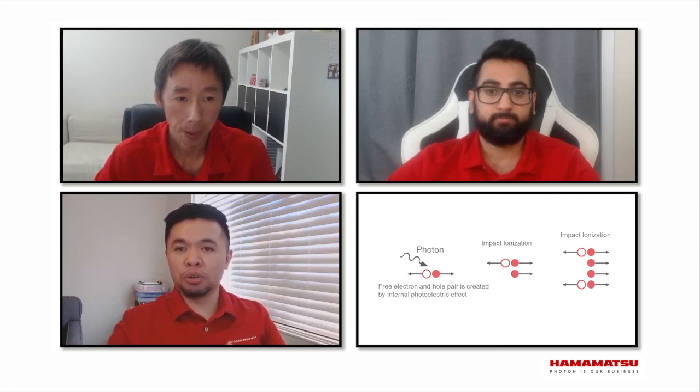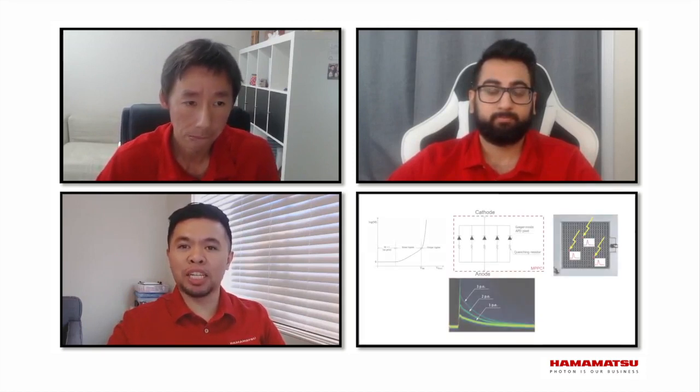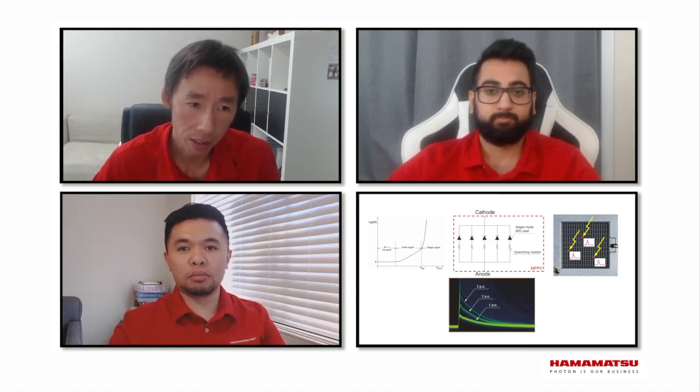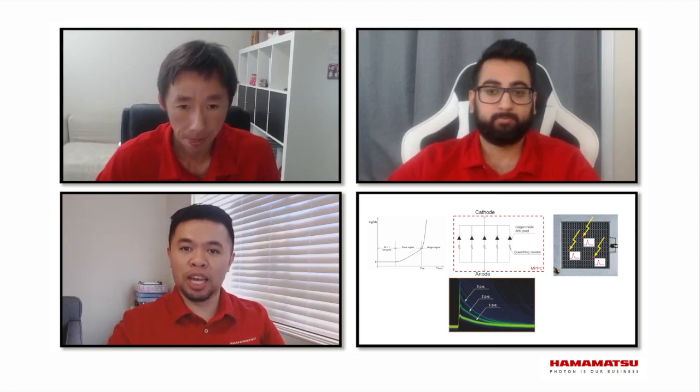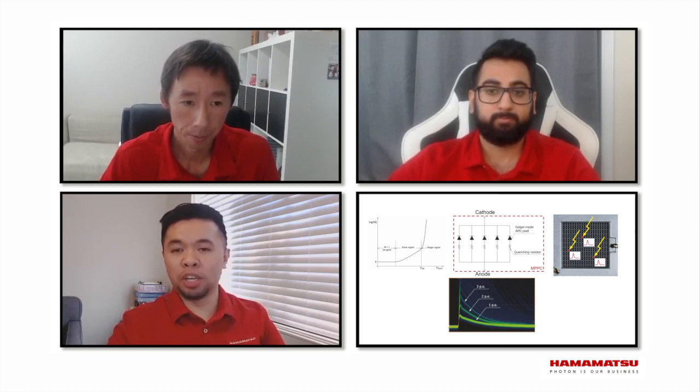The silicon photon multiplier or MPPC has a similar starting principle to APD in that the gain is created by impact ionization. But the MPPC is an array of APDs which are biased above the breakdown voltage in what we call the Geiger region. The avalanche doesn't stop on its own like in APD, so we add a quenching resistor which brings down the bias of the pixel to reset it. This is built into the MPPC directly, so the customer just needs to connect the positive voltage to the cathode and read out the signal from the anode.